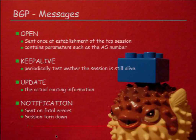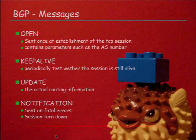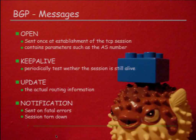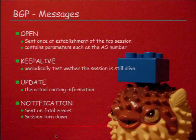BGP is actually kind of simple. It only knows about four message types — it's been slightly extended later, but originally just four. There is OPEN, sent right after you establish the TCP connection, containing things like your AS number and timing values for keepalives. There is KEEPALIVE, which just tells your peer you're still alive. There are UPDATES, which contain the actual routing information. And there are NOTIFICATIONS, which are fatal errors — when you receive a notification from your peer, you drop the connection and drop all routes learned from them.